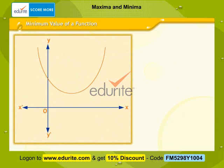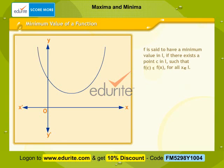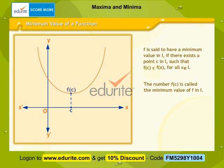Let f be a function defined on an interval I. f is said to have a minimum value in I if there exists a point c in I such that f(c) is less than or equal to f(x) for all x belonging to I. The number f(c) is called the minimum value of f in I. The point c is called a point of minimum value of f in I.